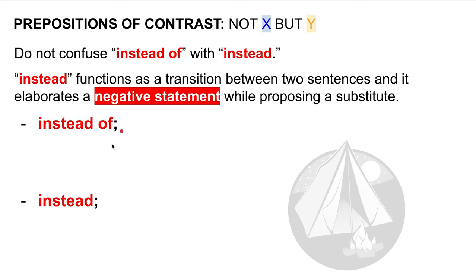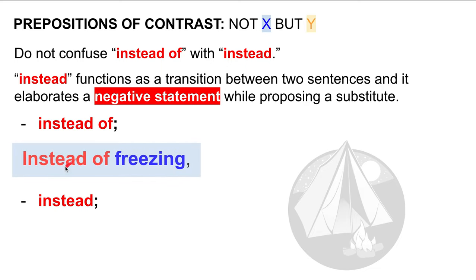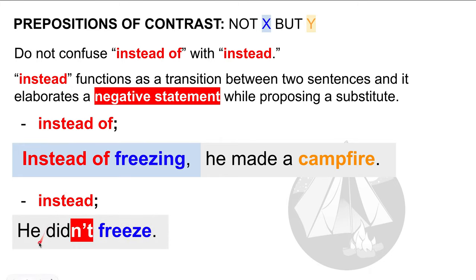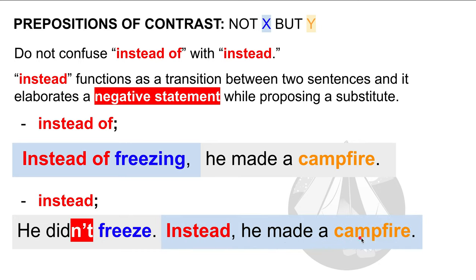Let's compare instead of with instead. Instead of is a preposition — so, instead of freezing, here we have the preposition and its object, freezing. Instead of freezing, he made a campfire. Now let's look at how instead functions as a transition between two sentences. Sentence one: he didn't freeze — that's a negative statement. Instead elaborates that: he didn't freeze. Instead, he made a campfire. It elaborates the negative statement by adding information, which is that he made a campfire.